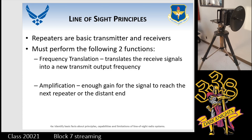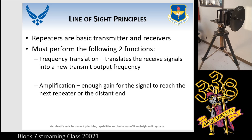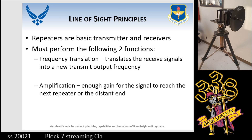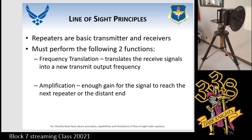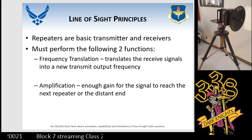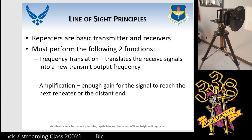Repeaters are considered basic transmitters and receivers. They must be able to perform two functions: frequency translation — which translates your received signal to a new output frequency — and amplification. So if your radio can only transmit 35 miles but you need it to go 50, you have to set up a repeater. That repeater would reamplify, and if the distant end requires it, translate whatever band you're operating in into the one that needs to be received.